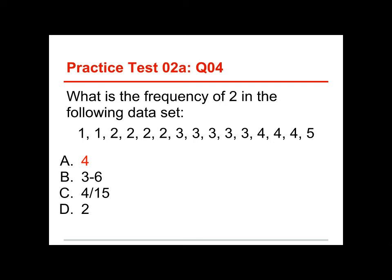Three through six are the positions in the list, but that's irrelevant. Four of the fifteen scores being two—that gets into something called relative frequency, but that's not what we're asking for. Two is just the value. The frequency of the value two is four, so it's A.